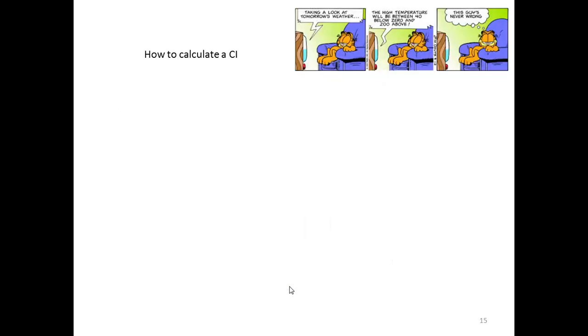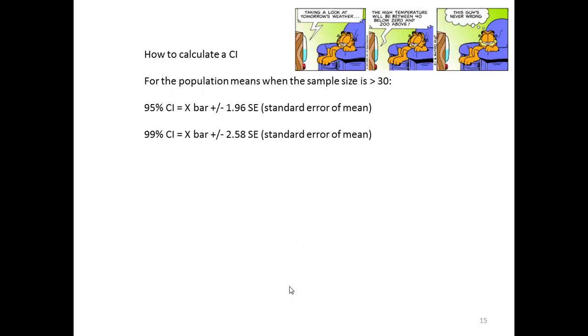How do we calculate a confidence interval? It's very easy. For the population means when the sample size is greater than 30, 95% confidence interval is equal to the mean plus or minus 1.96 of the standard error of the mean. If we want to calculate a 99% confidence interval, we want to be very sure that our sample is within the general population, then we would use 2.58.